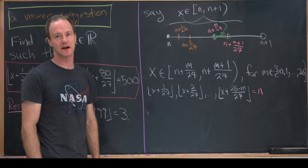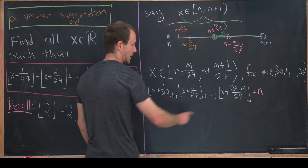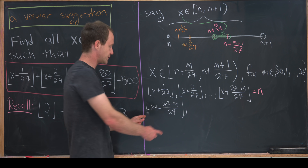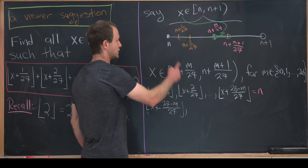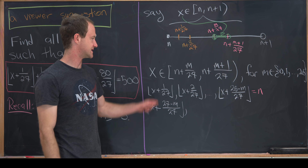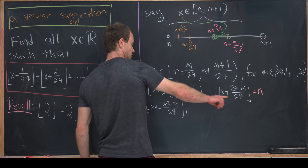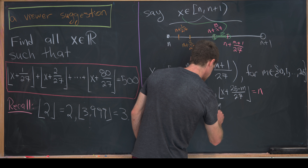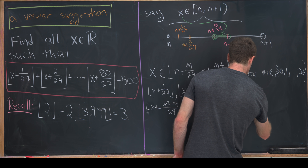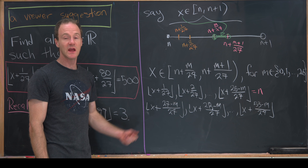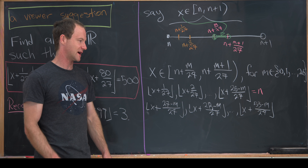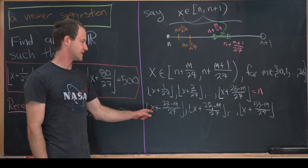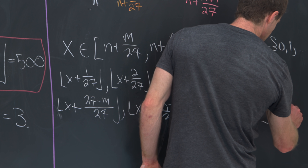The next category runs from x plus 27 minus m over 27 up to x plus 53 minus m over 27. In this case, each of these numbers lies between n plus 1 and n plus 1 plus 1 over 27, so all of them lie strictly between n plus 1 and n plus 2, which means when you take their floor, you get n plus 1.